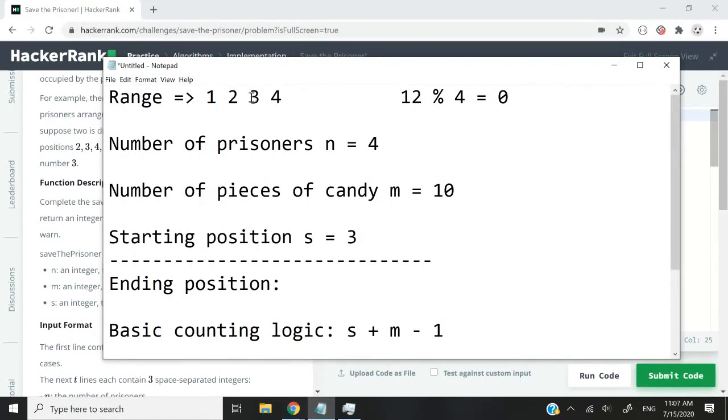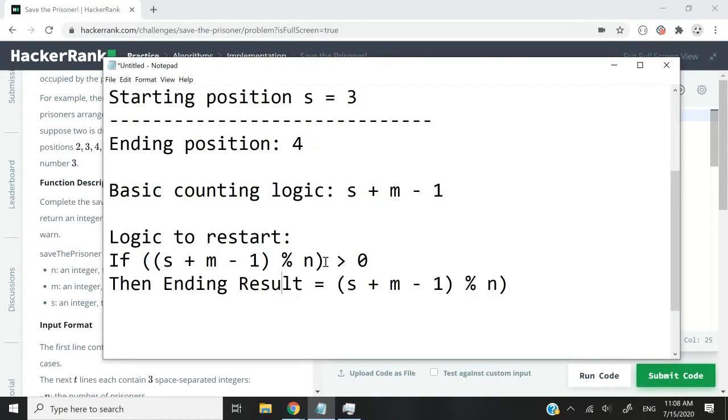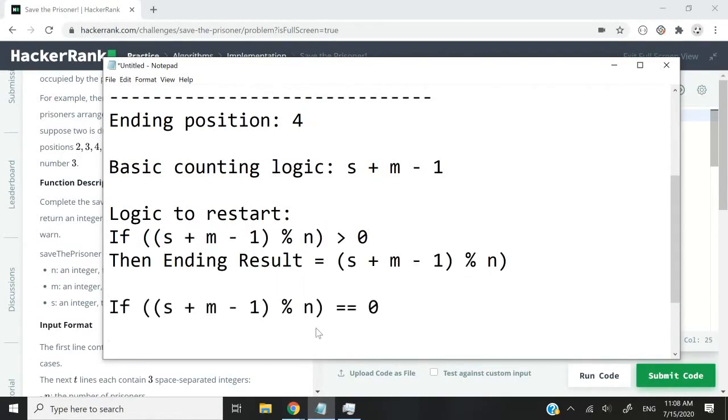Let's say I start at position three: one, two, three, four, five, six, seven, eight, nine, ten. So we got the ending position as number four, and four is equal to n. That's what you can see here. So I can say if this thing gives us a number that is greater than zero, then we can return this as the ending result. Otherwise, if this thing gives us zero, then we need to return n.